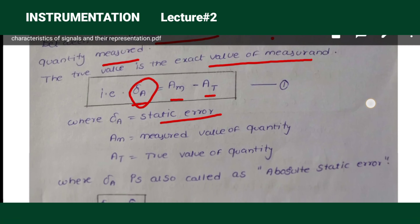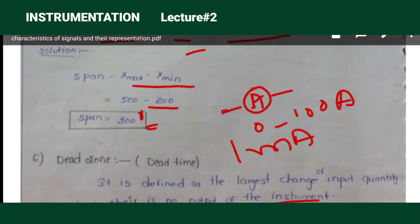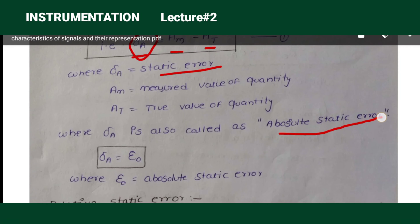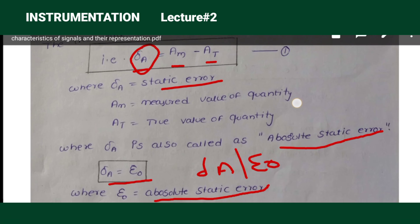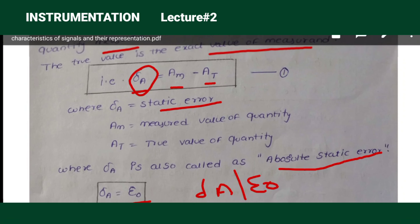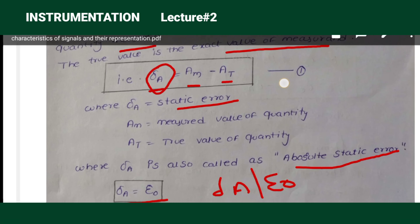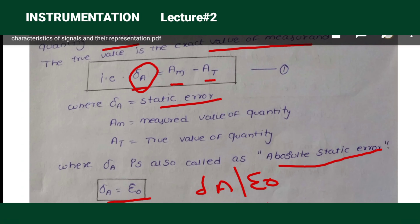Δa is also called absolute static error, and can also be represented as ε₀, where ε₀ is the absolute static error. We can represent static error by means of Δa and ε₀. Note that ε₀ here refers to absolute static error in instrumentation, not absolute permittivity used in magnetic measurements. Equation 1: Δa = am − at.